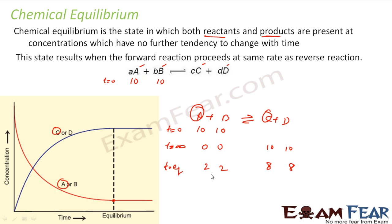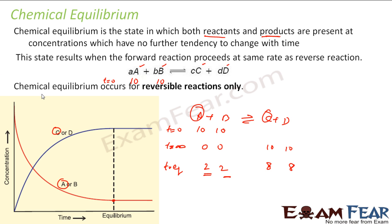The question is: why didn't these molecules react completely? The answer is because the reaction is also going in the backward direction. This occurs only for reversible reactions. Once equilibrium is reached — say at concentrations of 2 and 8 — the backward reaction is happening: C and D combine to form A and B, while A and B also combine to form C and D. Both reactions occur at the same rate, and that's what we call equilibrium.